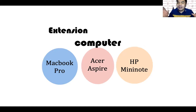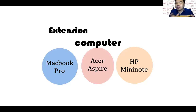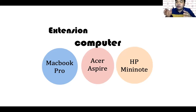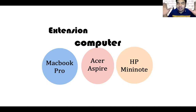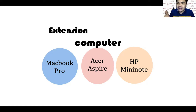The more general a thing is, the more examples or applications it has. But when you say MacBook Pro as compared to computer, the extension of MacBook Pro is fewer because it is more specific. So if it is more general, like 'computer,' it has more examples. If it is more general, there are more examples or applications, and therefore there is greater extension.